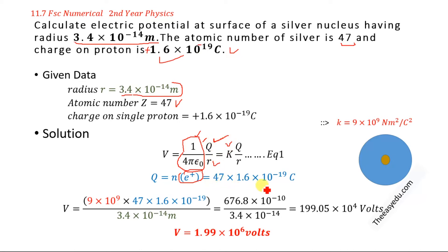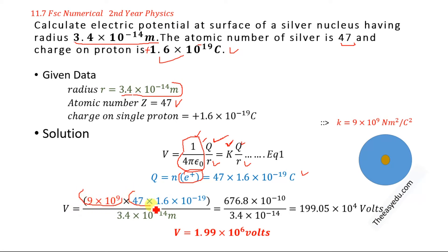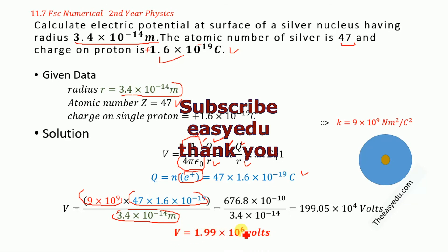Now we have the value of K, the value of Q, and the value of the radius of the silver nucleus. The electric potential at the surface of the silver nucleus is V = K × Q / r. By solving this, we finally get V = 1.99 × 10⁶ volts. That's it — thank you for watching, and don't forget to subscribe for more videos.